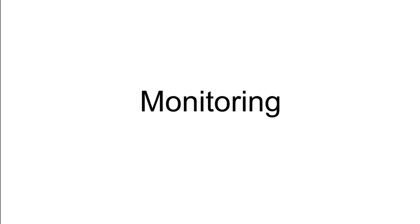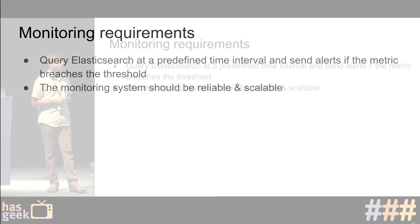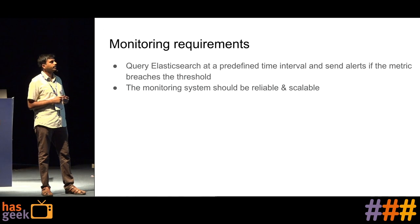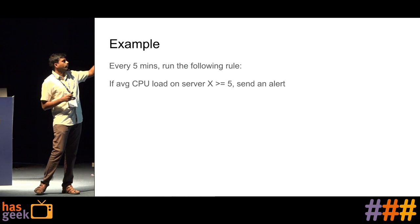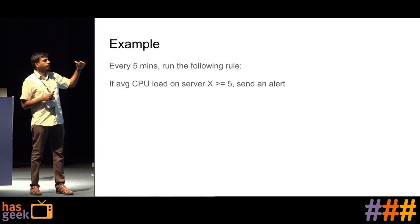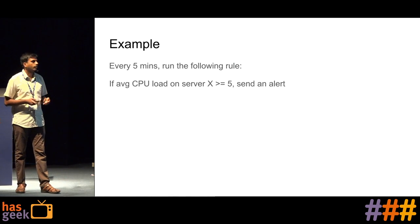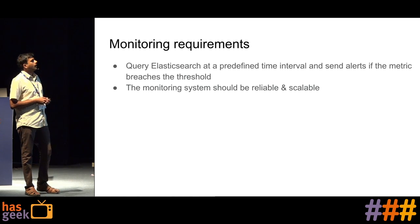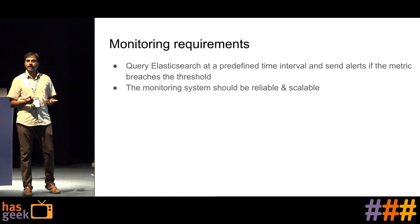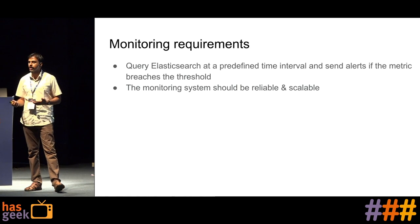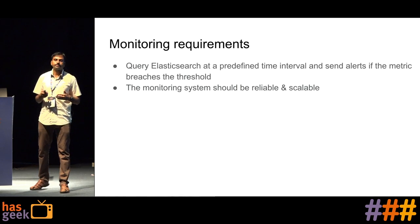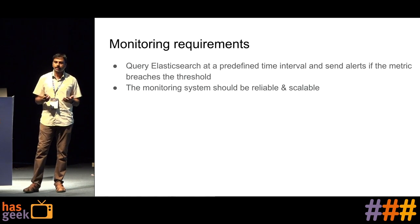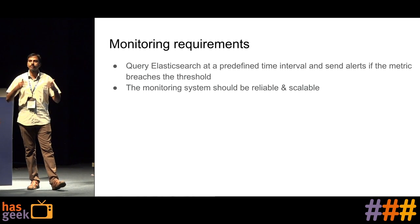Moving on to monitoring. The requirement is to query Elasticsearch at predefined time intervals and send alerts if a metric reaches a threshold — for example, every five minutes, evaluate the rule: if average CPU load on server X is greater than or equal to 5, send an alert. As with the metric aggregation system, the monitoring system should also be reliable and scalable. If your monitoring system is down, you won't be aware of any downtime. Today I might run 10 rules every five minutes; tomorrow it could be 10,000 or even 1 million rules.